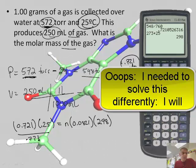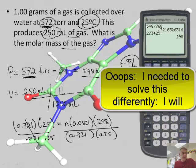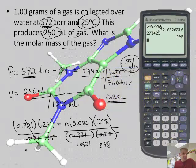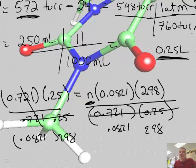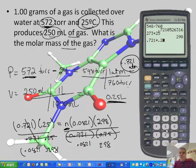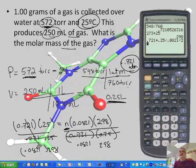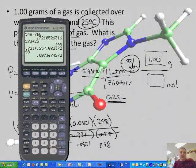I'll divide both sides by 0.721 and 0.25. These cancel here, and of course I did that wrong. I'm going to divide both sides by 0.0821 and 298. 0.0821 and 298, because of course the N was on this side of the equation. So I'm going to take 0.721 times 0.25 divided by 0.0821. I could have divided by R, which I saved earlier. Divided by 298 gives me 0.007.